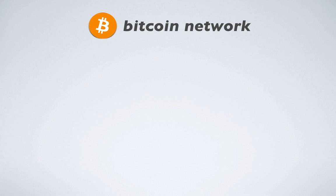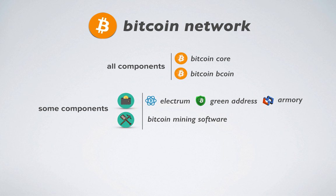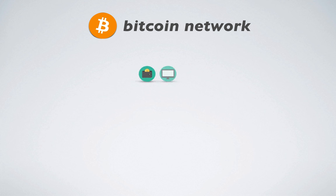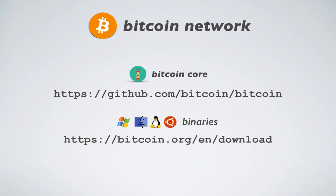In order to participate in the Bitcoin network, you have several choices for the components you'll use to own and/or exchange Bitcoin. You can use existing software for all components, use existing software for some components, create custom individual components like a wallet, or if you're really ambitious, create a custom implementation of all the components. The most dominant software choice for all components — wallet, full node, and miner — is known as Bitcoin Core and can be found at its GitHub repo. There are also immediately usable binary versions of Bitcoin Core for Windows, Mac, Linux, and Ubuntu. A wide variety of wallet and mining choices are also just a Google search away.